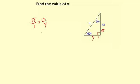So now I'll solve this. I'm going to cross-multiply. The square root of 3 times y is y square root of 3, equals 1 times 12, which is 12.